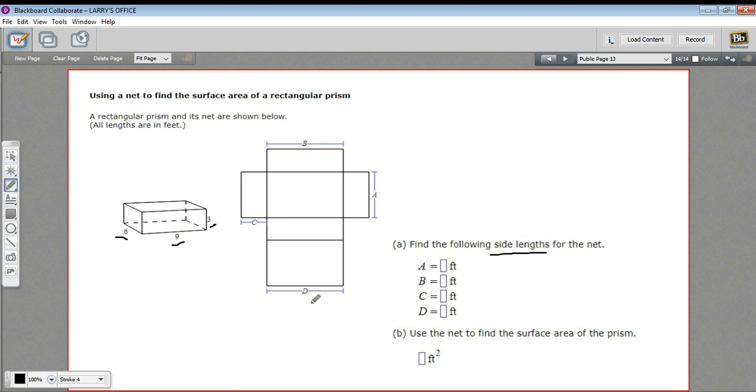Well, the longest side here is this one with D, and then all of these lengths are the same as D. So those are all nines. And that means B is nine as well.